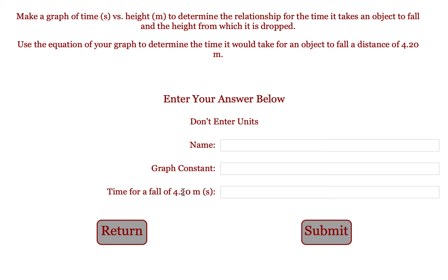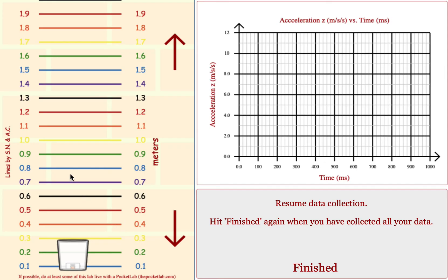Then use the equation you got from your graph to predict the time of fall if you were to drop it from a height that was not one of the ones that we measured.